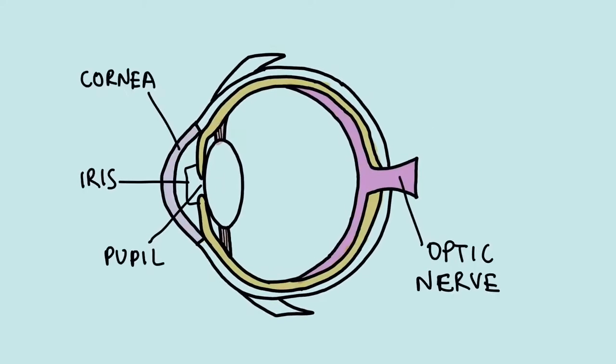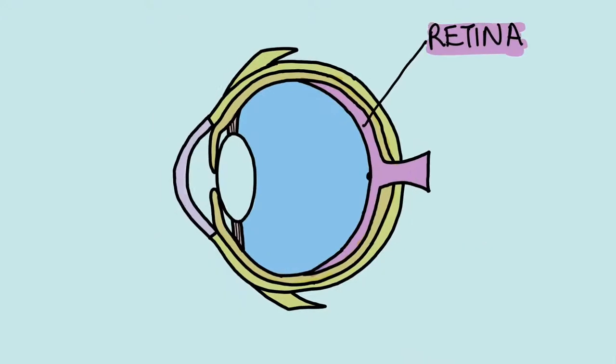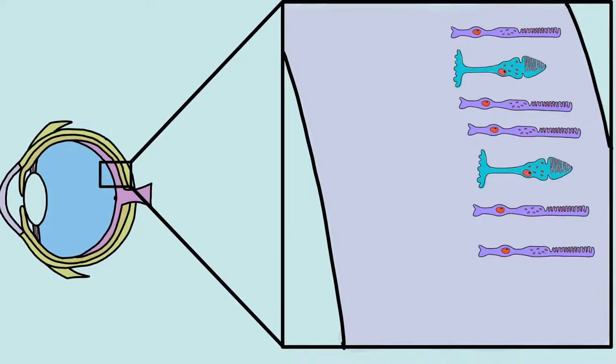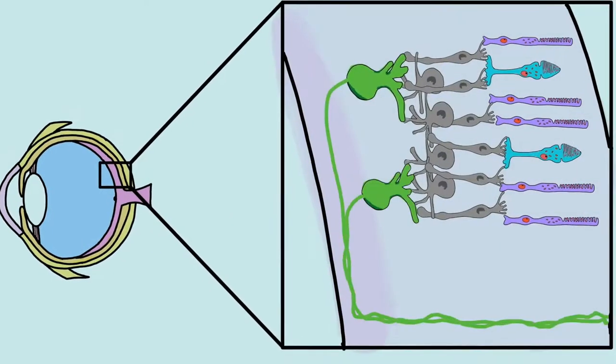Eyes. On the back of your eyes are a collection of cells known as the retina. These contain different types of light sensitive cells. These cells contain photoreceptor proteins that allow them to respond to light.